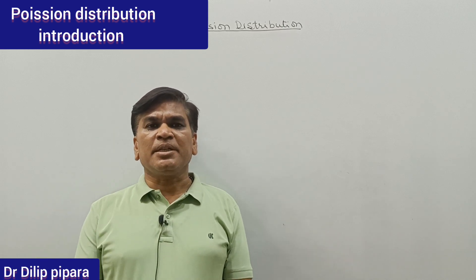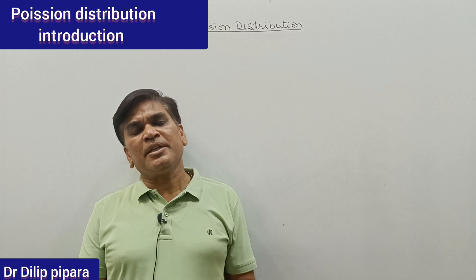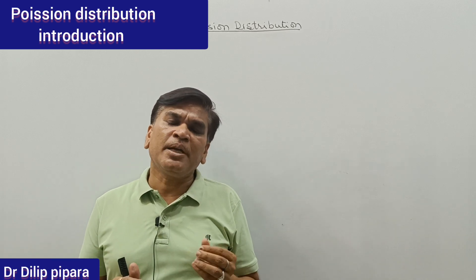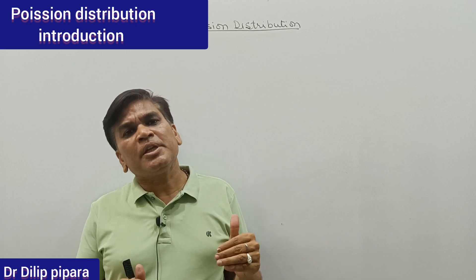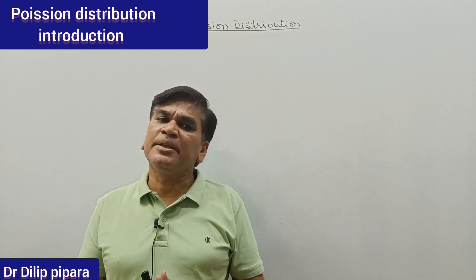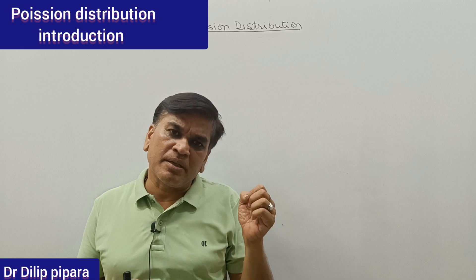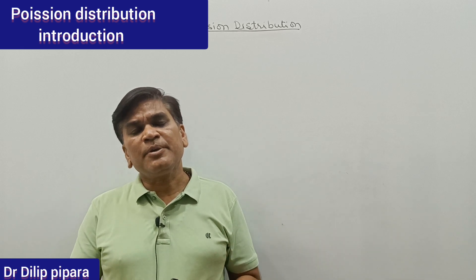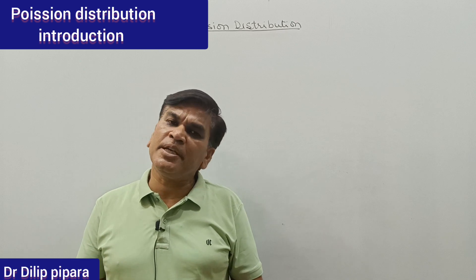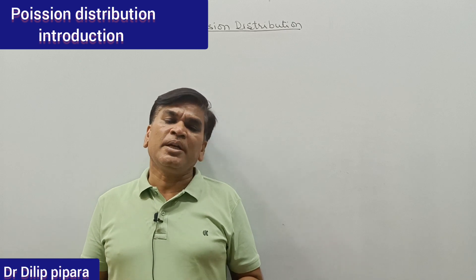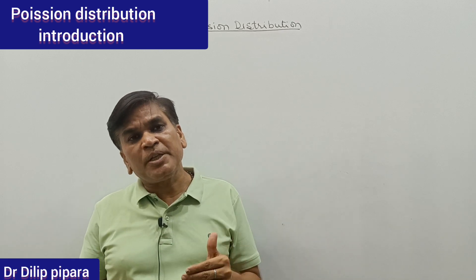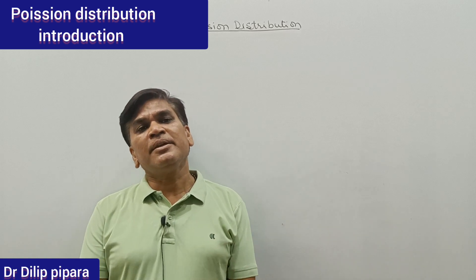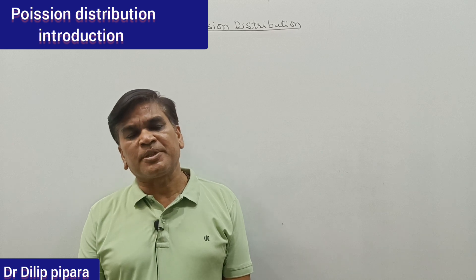This distribution is especially used when the probability of an event is very low and the non-probability of the event is very high. It means when the probability of occurrence of an event is very low and the probability of non-occurrence is very high, then we will use the Poisson distribution.